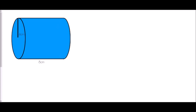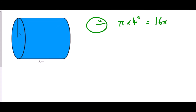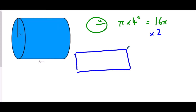Let's try again for a cylinder with a radius of four centimeters and a height of eight. Just because the shape has been tipped over doesn't change how we work it out. The circle area is pi times four squared, which is 16 pi — we'll need two of those. The rectangle has a height of eight and a width equal to the circumference, pi times eight, so the rectangle area is pi times eight times eight, which is 64 pi.